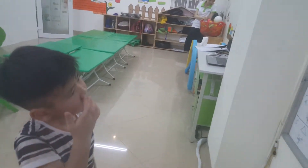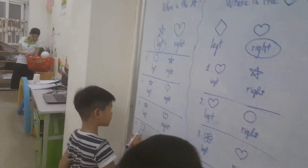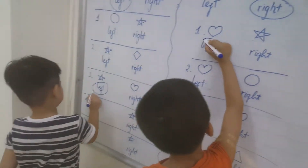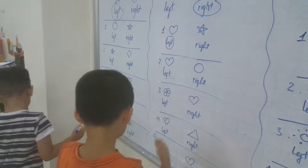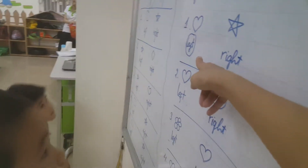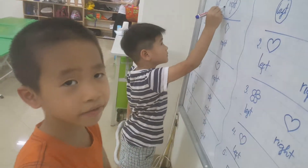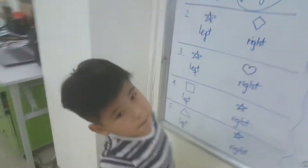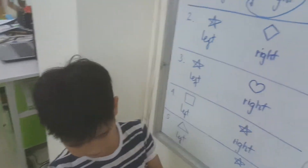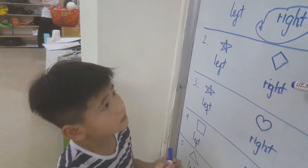Are you ready? Yes! Find me the star with number one. Find me the heart with number one, please. Heart — where's the heart, number one? Come on, number one. Where is the star? Where is the heart?